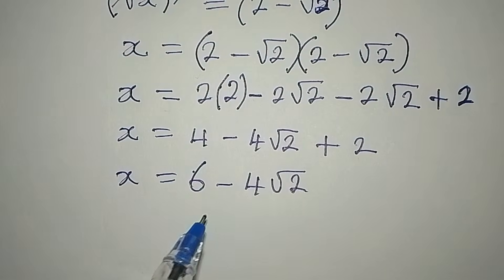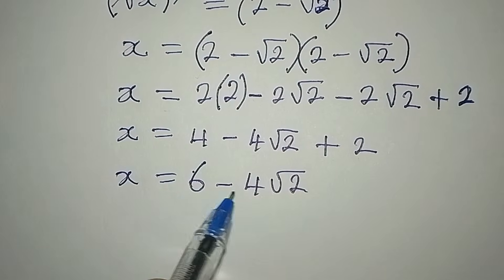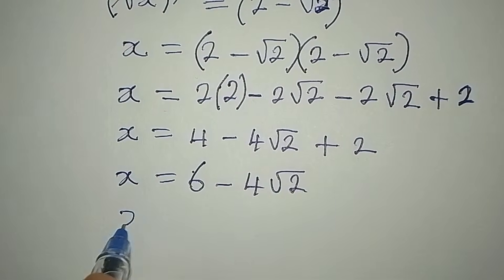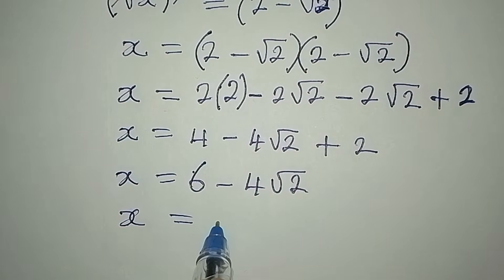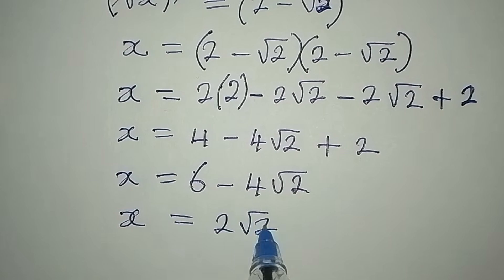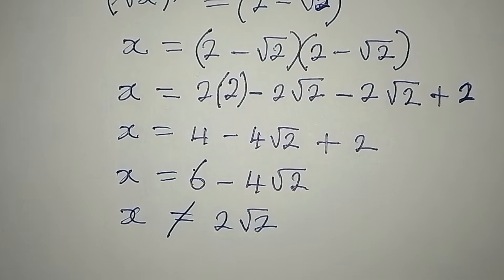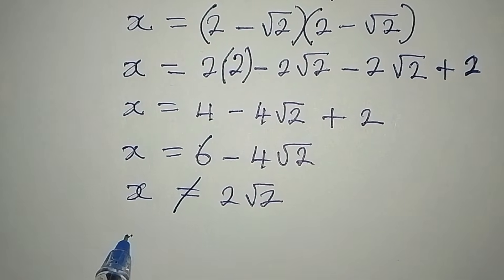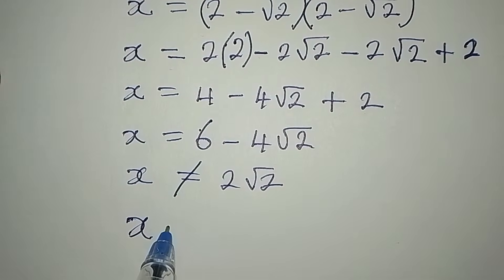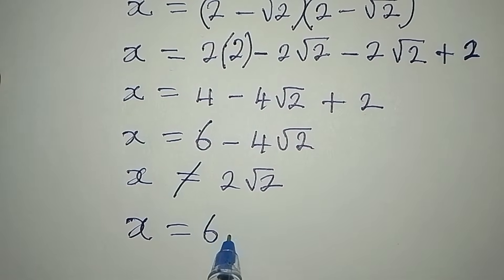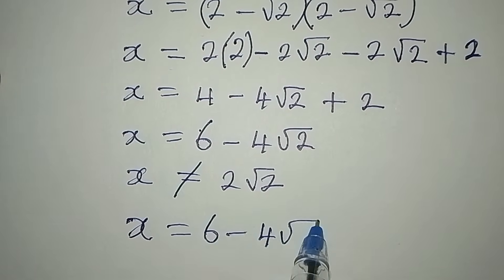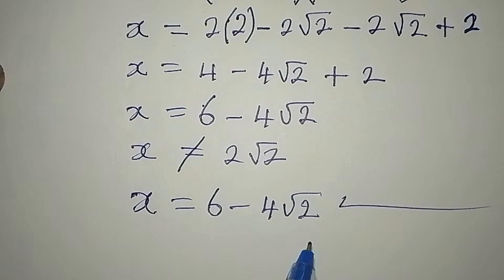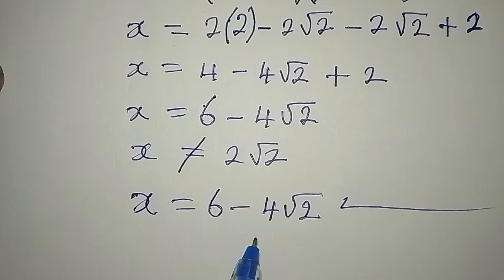Look at one of the mistakes that one can make — you might say 6 minus 4 will give you 2 root 2, so your answer would be x equals 2 root 2. But that is wrong. You cannot simplify that way, so you stop at x equals 6 minus 4 root 2. This is the value of x.